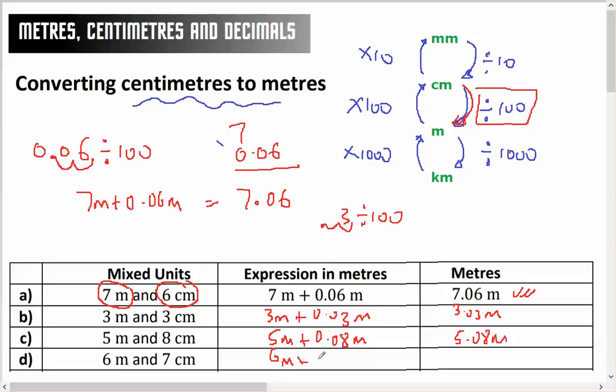And 6 metres plus 0.07 metres will give 6.07.